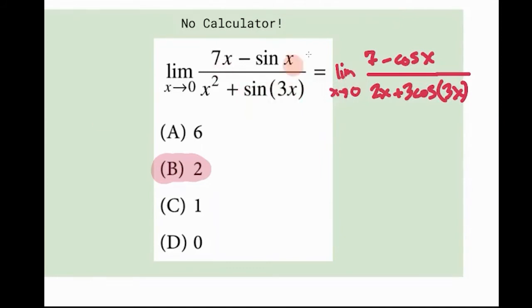From here, you can try plugging in zero. If you plug in zero at the top, you're going to get 7 minus 1. If you do direct substitution, the limit goes away. Plug in zero at the bottom, you get zero plus 3, which is just 6 over 3, which is 2.